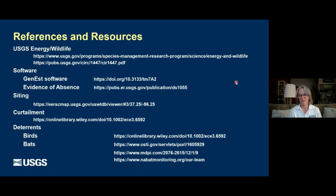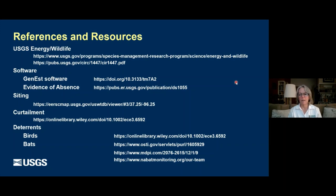Someone asked: has USGS studied the impacts of carbon-free renewable energy and its positive benefits to climate change, and therefore positive benefits to birds, bats and other wildlife? Do the positive ecosystem and climate benefits balance or potentially offset the direct impacts? Certainly people have looked at that from different perspectives, but whether a comprehensive study has been done I don't know, and I'm not even sure a comprehensive study could be done. There are some USGS authors who have addressed that question, but I can't speak to their take-home message.